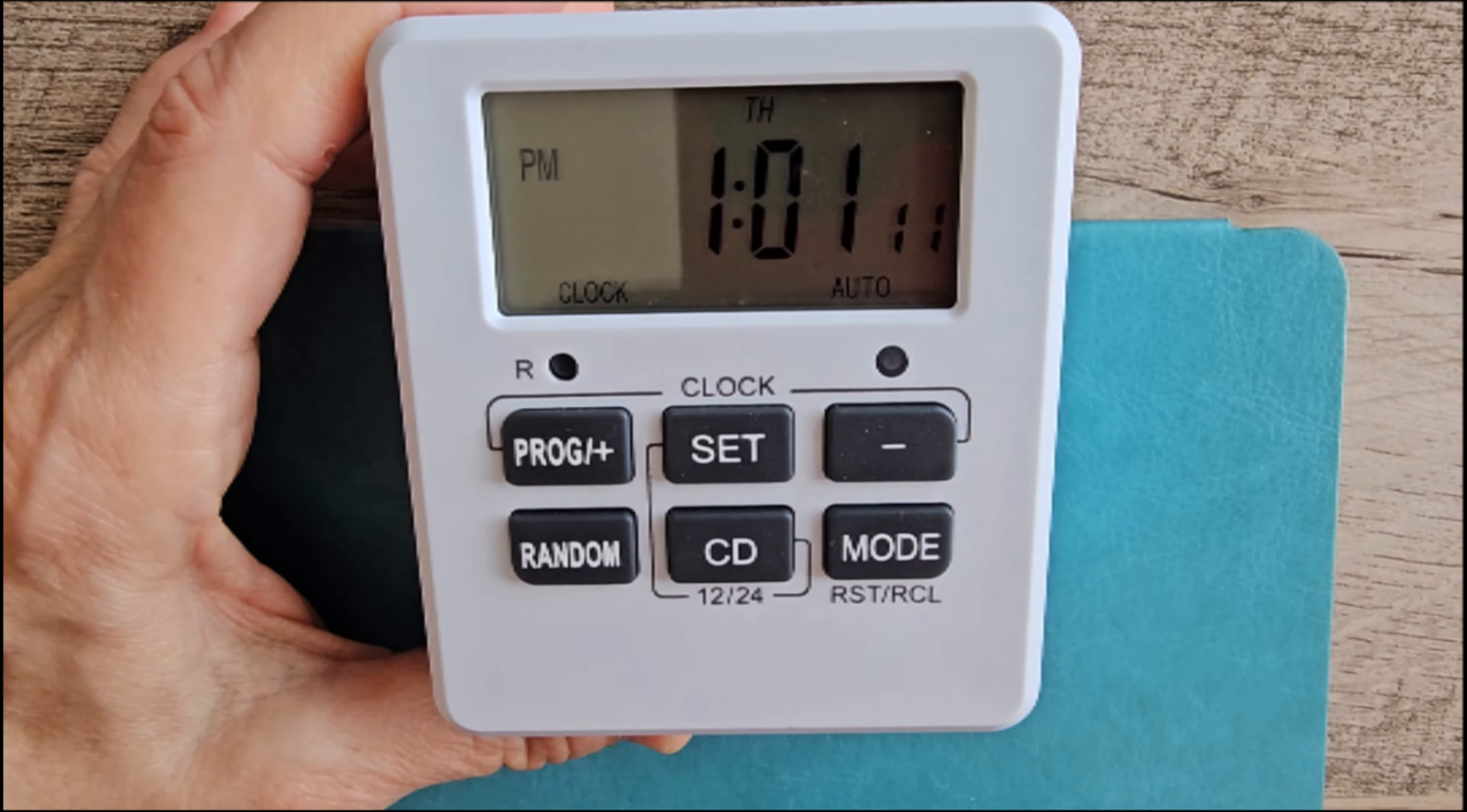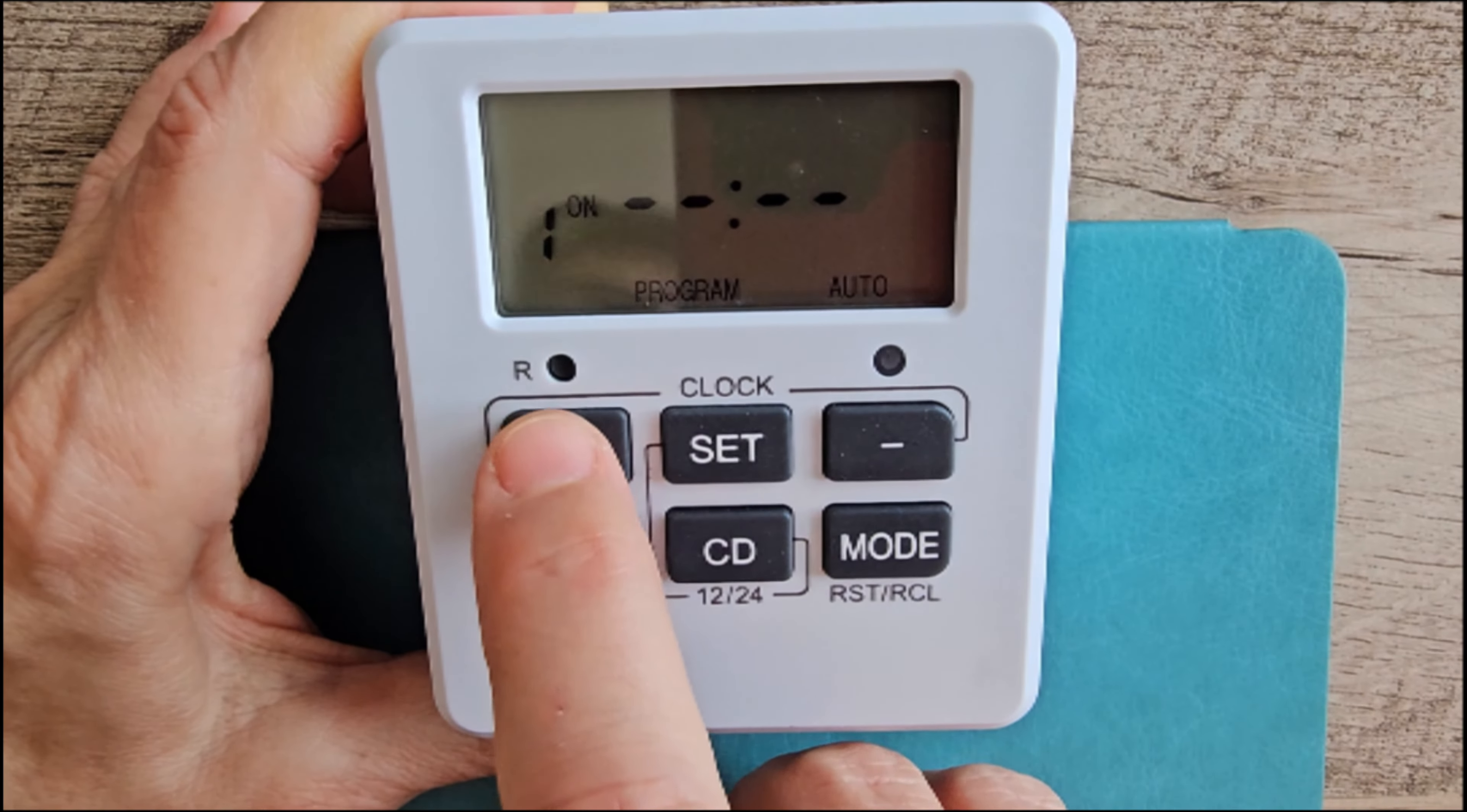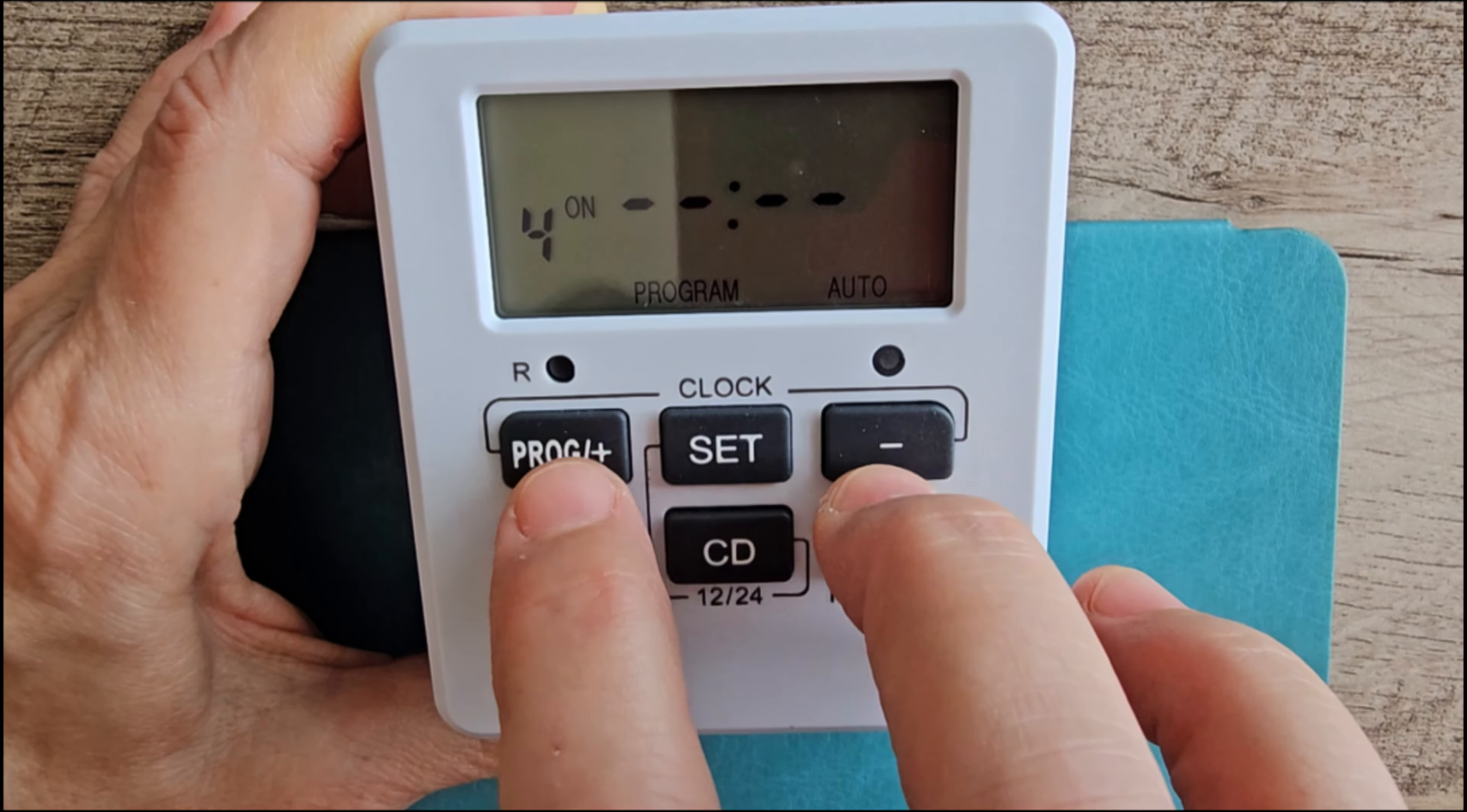For daylight savings time, just press the set and the mode buttons together. See? Goes up an hour. Press set and mode again. Goes back an hour. So you don't have to go through the whole rigmarole to change the hour.